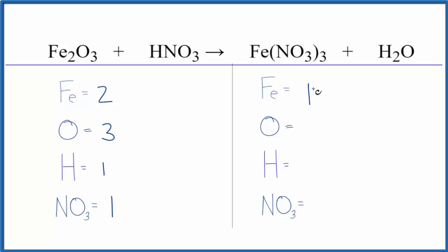In the products, we have one iron, one oxygen, two hydrogens, and then the nitrate ion again, we have three of those. So three nitrate ions. It makes it a lot neater when we write it this way, easier to understand what we need to do.